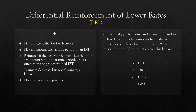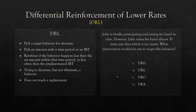John is finally participating in raising his hand in class. However, John raises his hand almost 30 times per class, which is too many. What intervention would you use to target this behavior? We're trying to lower the rate. Do we want to get rid of this behavior? No. So we're looking at a DRL. We want to lower the rate of hand raising — maybe get it down to 10 or five times an hour. We don't want to eliminate it, but we do want to decrease it. Therefore, we're going to use a DRL.